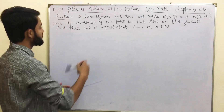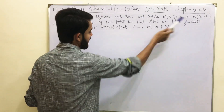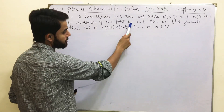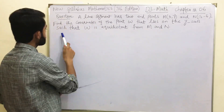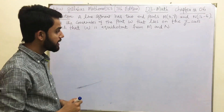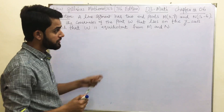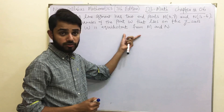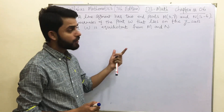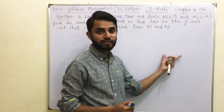The question says: a line segment has two endpoints M and N. Find the coordinates of the point W that lies on the y-axis such that W is equidistant from M and N. Since this question belongs to coordinate geometry, it would be unfair to solve it without drawing the XY plane.